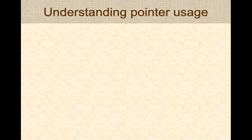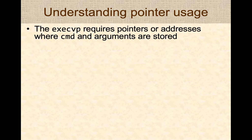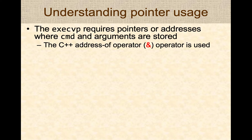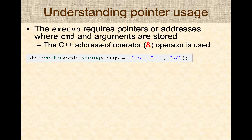Let's do a slightly deeper dive on understanding the pointer usage. Keep in mind, execvp requires pointers or addresses. This is because we are operating at the operating system level, and the operating system only works with pointers or memory addresses in a language-agnostic way — it doesn't care whether we are calling it from C++, Java, Python, or whatever language. It works with the most common subset at the machine level, requiring memory addresses or pointers. In C++, we use the address-of operator, the ampersand character, to get the address of or pointers to objects and variables.